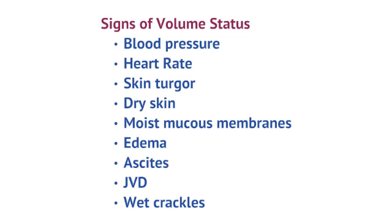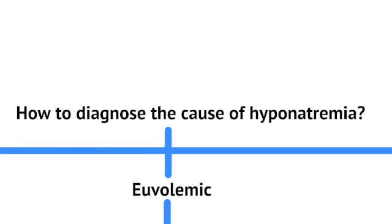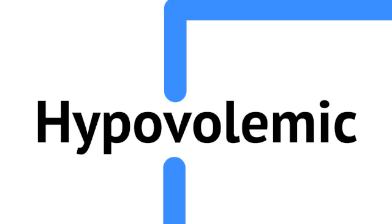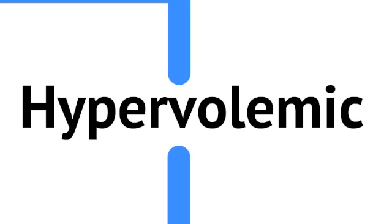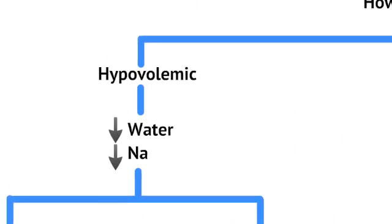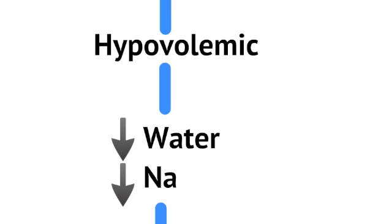Now let's look at the algorithm for diagnosing hyponatremia. To diagnose it, you think about volume status, which has three classifications: hypovolemic, meaning low volume or dehydrated; euvolemic, meaning just the right amount of water; and hypervolemic, meaning fluid overloaded. These volume statuses differentiate between the causes of hyponatremia. In a patient who's hypovolemic, they tend to have decreased water and decreased sodium. Wherever sodium goes, water goes — so if you're dehydrated, sodium is lost and water follows, which can be due to sweating or medications causing excess urination.